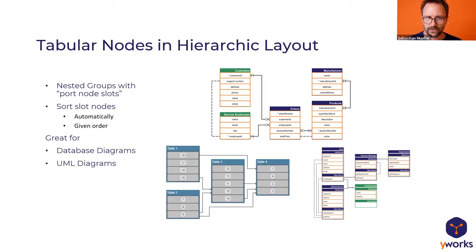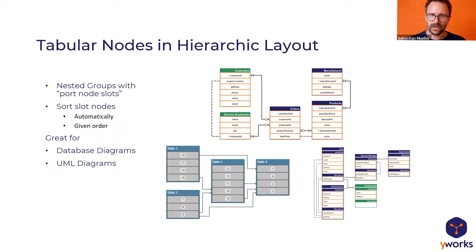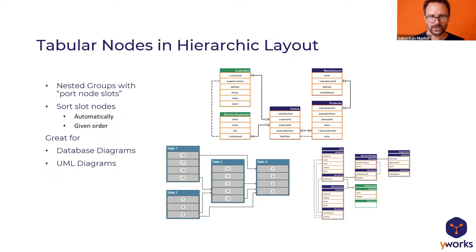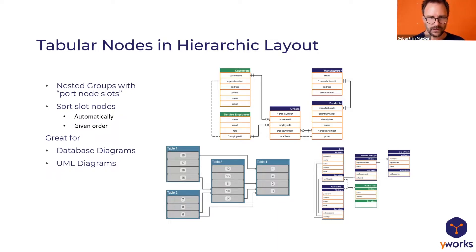Another feature is improved support for nested groups. Many customers used this to model table-like structures inside group nodes, basically designing a compound node with the help of nested groups. While this was feasible before, it required many tweaks and still sometimes didn't lead to optimal results because the algorithm wasn't really aware of what users wanted. So with this release, we added this as a core capability. If you want nodes with nested rows or columns inside them used as connection points, not just for visualization but as real connection targets, it's now super easy to configure the layout to produce perfect results.